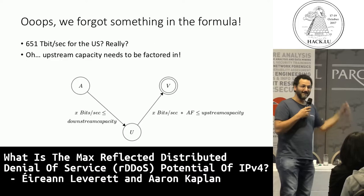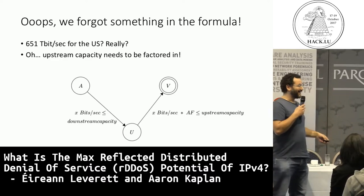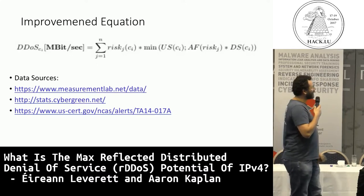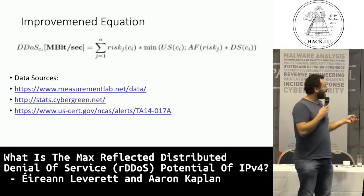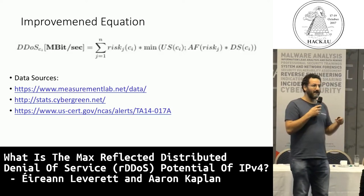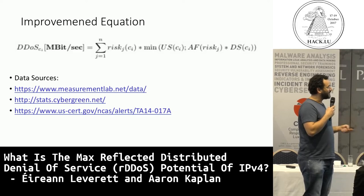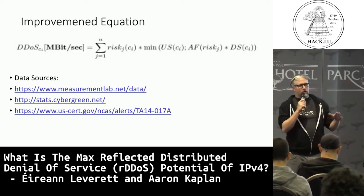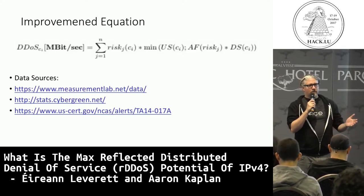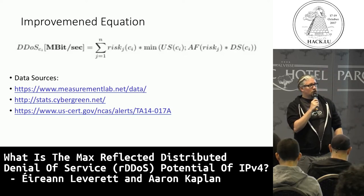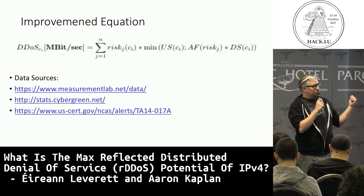Easy task, right? Just get the upstream capacity of every IP address. So the other Aaron came up with a really good idea to take the MLab data from measurementlab.net and calculate the quartiles - basically min, max, upper and lower quartile, and the median. Why do we take the median instead of the average? Because capacities come in chunks, not a smooth function. So we chose to use the median for every individual country.